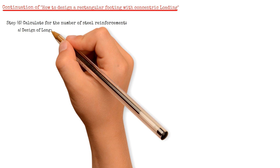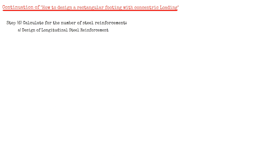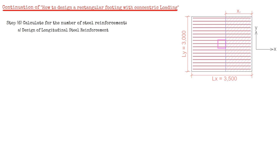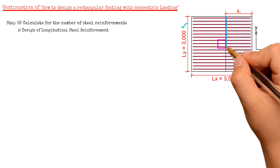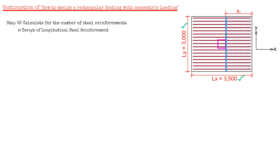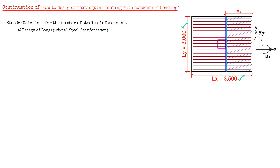We will begin with the design of longitudinal steel reinforcement. In this diagram, we have a length LX equals to 3500 mm and length LY equals to 3000 mm. The critical sections for moment occur at the face of the column. The bending moment in each direction of the footing must be checked and the appropriate reinforcement must be provided. In rectangular footings, the bending moments in X and Y directions are different. To determine the reinforcement required, the depth of the footing in each direction may be used.